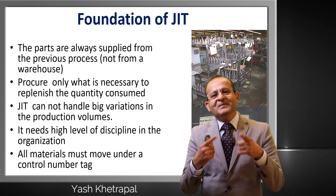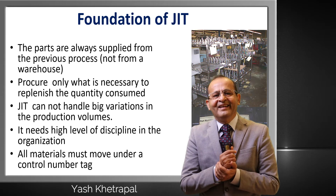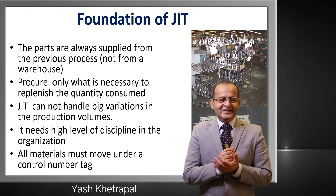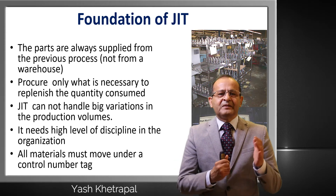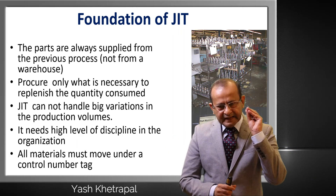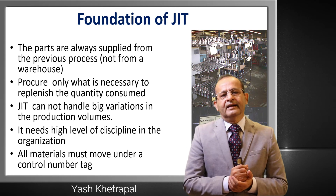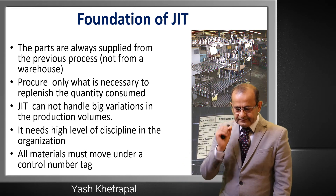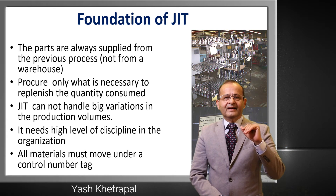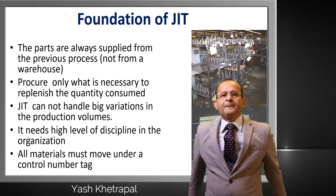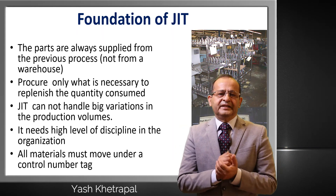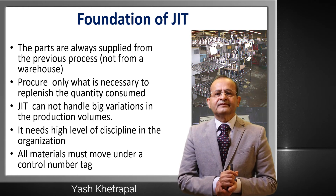I remember 1995 — I went to Ludhiana and visited Hero Cycles. At that time they were making 28,000 bicycles per day in two shifts — amazing, with no computers at all, and yet just-in-time was there. How were they doing it? Production happened in A and B shifts. In the C shift — the night shift — material planning people would come, check the production plan for the next day, check stock availability, and manually work out the material requirement.